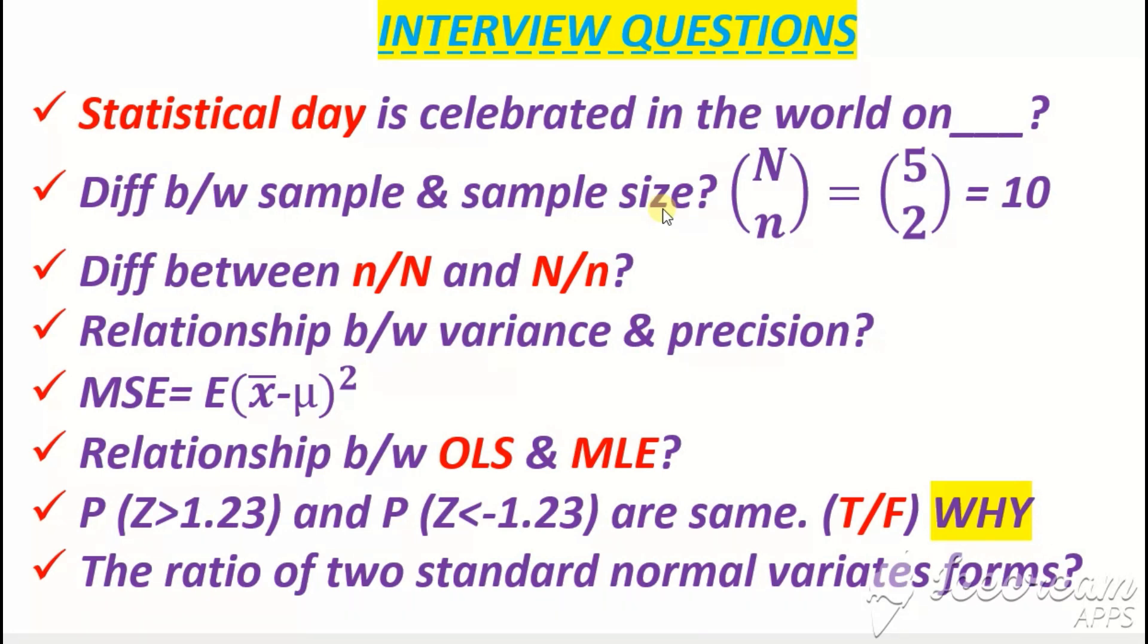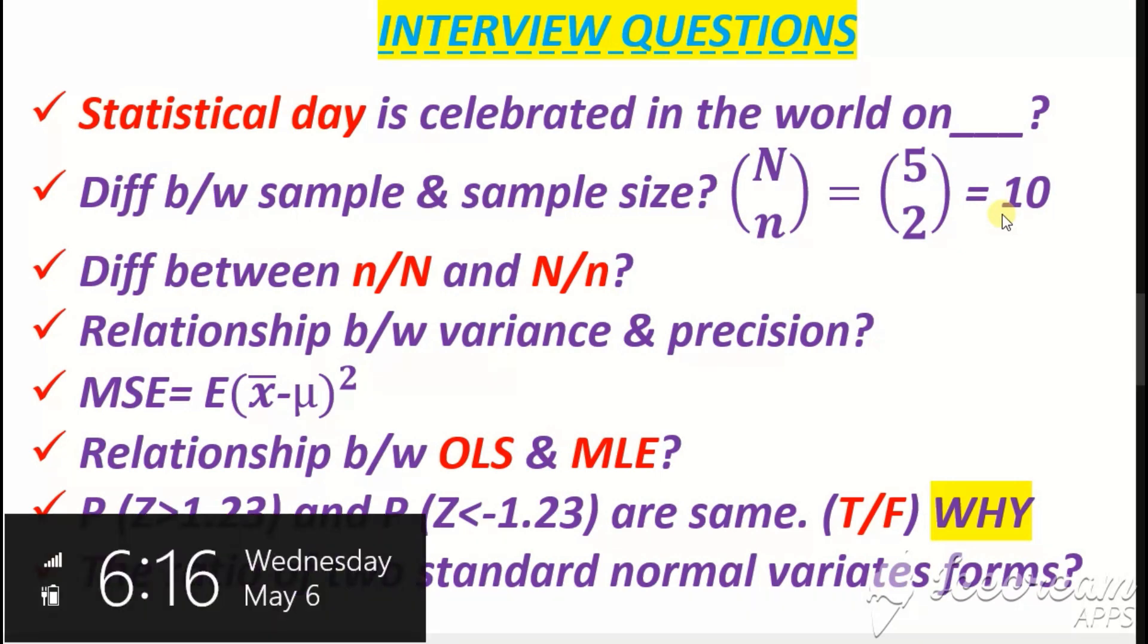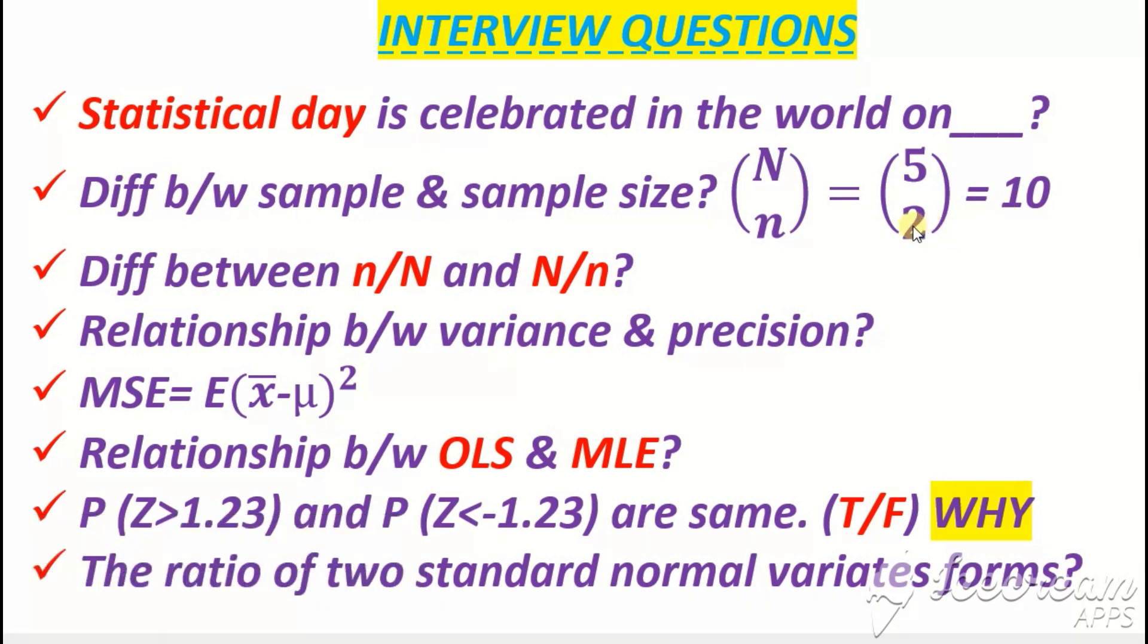This example will be clear. Let's suppose population size is 5 and we draw two random samples. If we draw a sample, compare with all possible samples - ten samples we can draw. So how many samples are possible? Ten samples are possible. Each sample contains two elements, so sample size is 2.